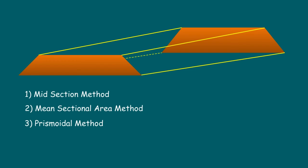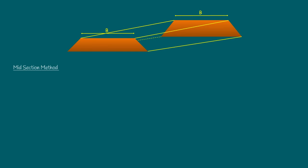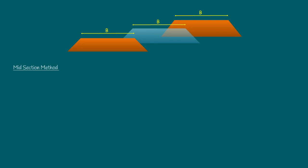We will calculate the quantity and derive the formulas for each method. Now we will see the midsection method. In the midsection method, we determine the mean depth of these two cross-sections and calculate the other data required, then create a new imaginary cross-section at the middle of these two chainages. First, let us derive the mean depth. The mean depth dm equals d1 plus d2 divided by 2, which is 0.856 plus 0.950 divided by 2, equals 0.903 meters.